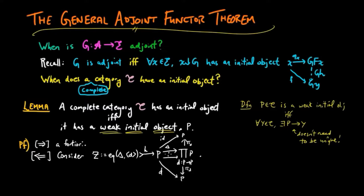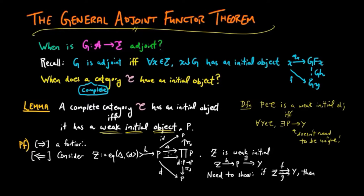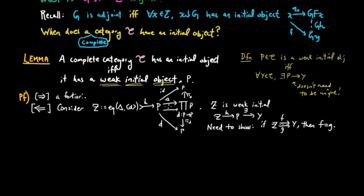The idea is that we're trying to get rid of extra morphisms that exist between the initial object. First note that Z is still a weak initial object: given some object Y in C, there exists a morphism from P to Y since P is weak initial, and then we can pre-compose by H to give a morphism from Z to Y. So all we need to show is that if we're given two morphisms F and G from Z to some object Y, then necessarily F equals G, which gives us the universal property — the definition of an initial object. We assume two morphisms F and G from Z to Y. If it turns out F and G are equal, then the equalizer must be an isomorphism; that follows from the universal property of limits. So our goal is to show that K is an isomorphism.